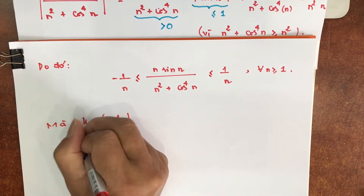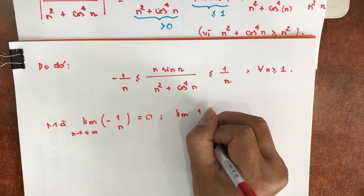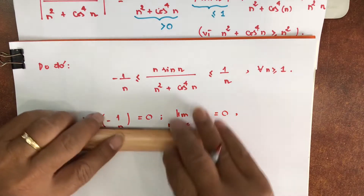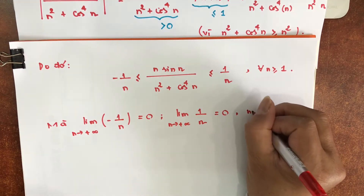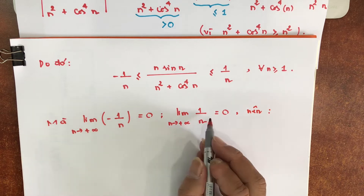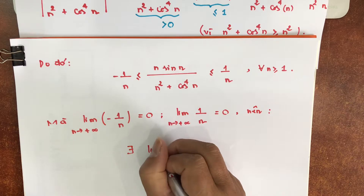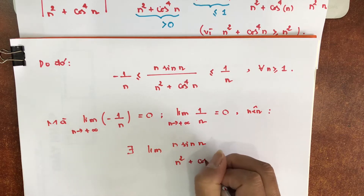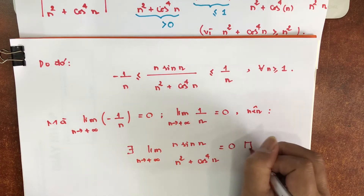Giới hạn của trừ 1 chia n khi n tiến về cộng vô cùng thì dễ thấy là bằng 0. Giới hạn của dãy số chặn trên là giới hạn của 1 chia n khi n tiến về cộng vô cùng, dễ thấy là bằng 0. Nên suy ra là dãy số bị kẹp ở giữa cũng có giới hạn và giới hạn bằng giới hạn chung ở đây luôn. Tồn tại giới hạn của n·sin(n) chia n bình cộng với cốt mũi 4 khi n tiến về cộng vô cùng và bằng 0.